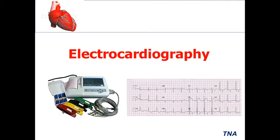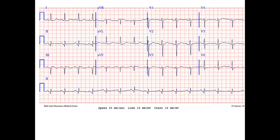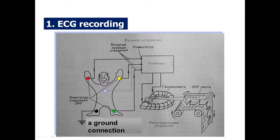Today we will focus on basic knowledge of ECG recording and interpretation of ECG. Here is a real patient ECG, and you see we are recognizing 12 leads. There are 12 leads which consist of standard leads — 1st, 2nd, and 3rd standard leads. We also recognize augmented leads AVR, AVL, and AVF, and 6 chest leads from V1 to V6.